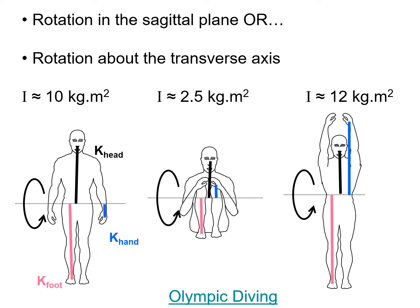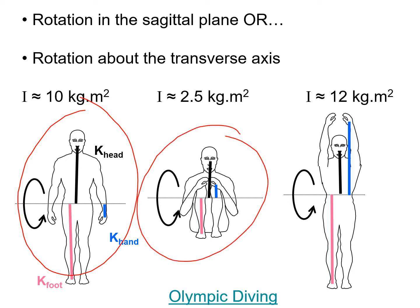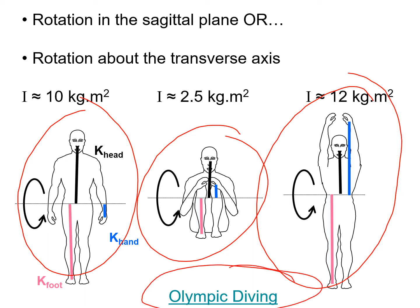Olympic divers start their bounce on the springboard in a relaxed upright position. When they're up in the air they tuck in, decreasing their moment of inertia so they can increase their angular velocity and perform multiple tumbles while still airborne. However, before entering the water they lengthen themselves out to slow down their rotation, ensuring their arms and head enter the water first so there's very little splash.